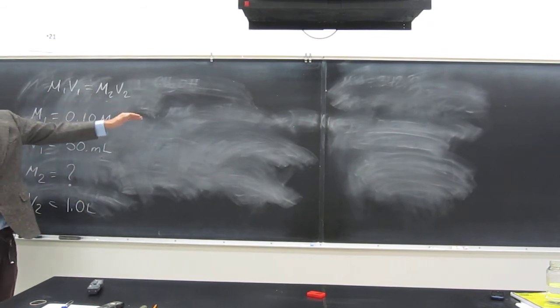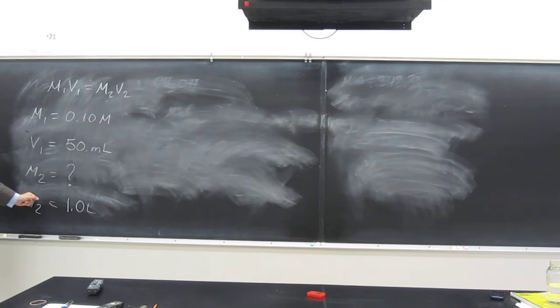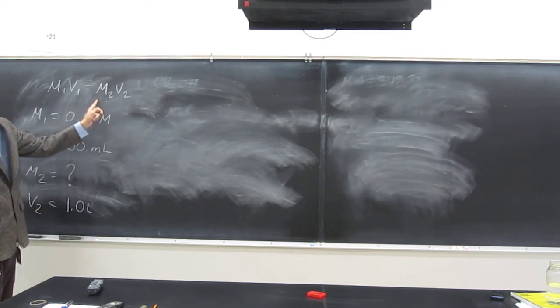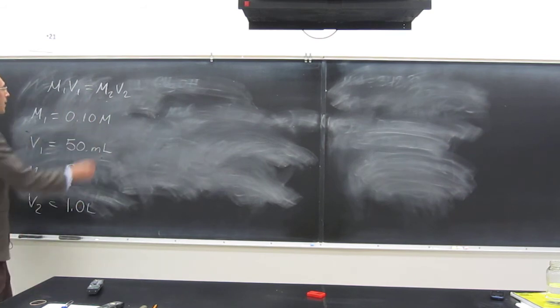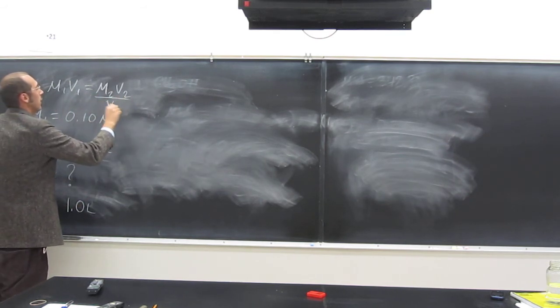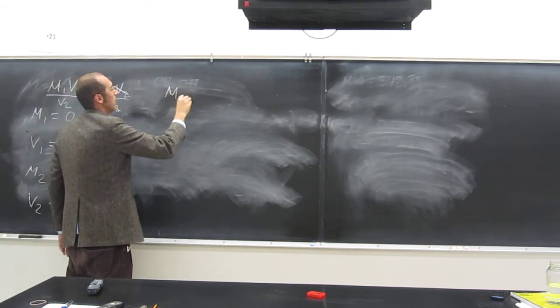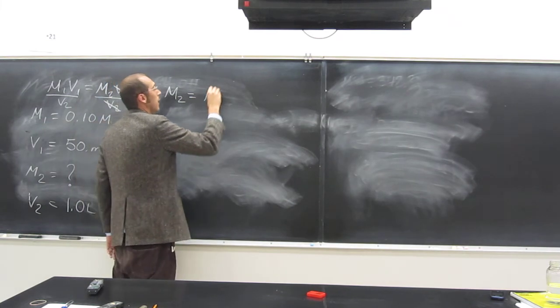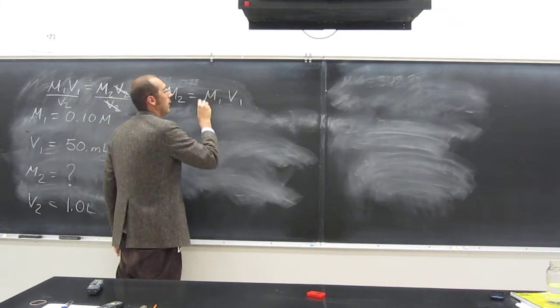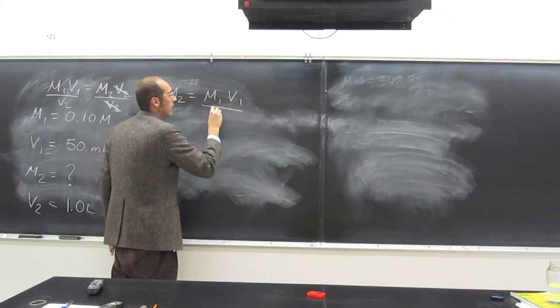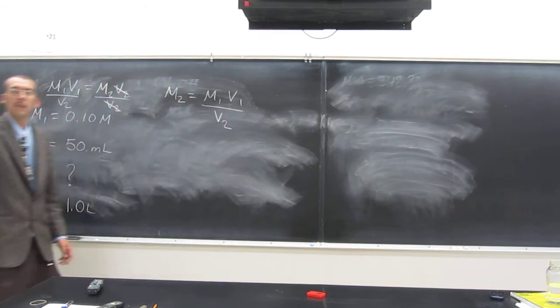The other thing we want to do, let's isolate the variable M2, okay? So how do we isolate that variable? We're going to divide both sides by V2. Very good. So what's our new formula? M2 equals M1 V1 divided by V2, right? Does that make sense to everyone?